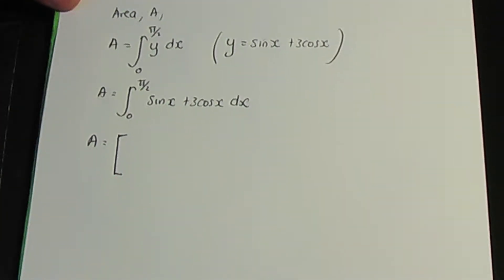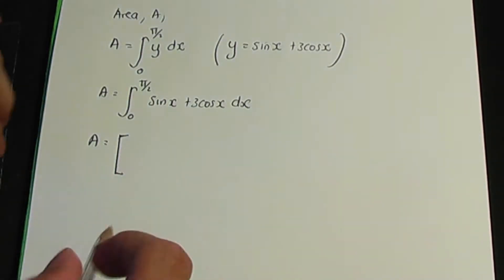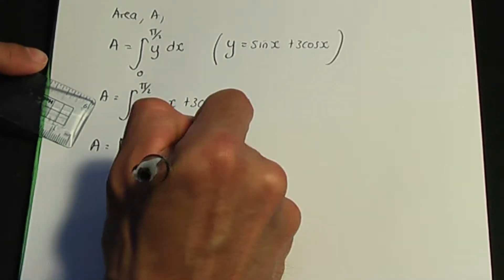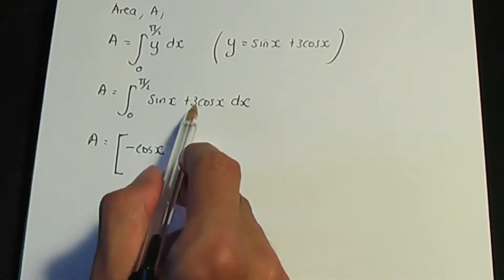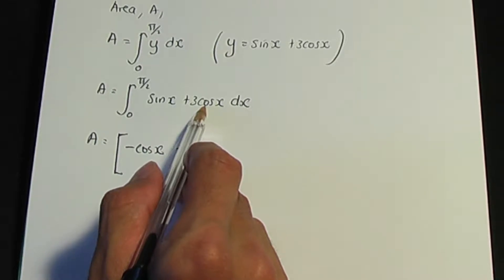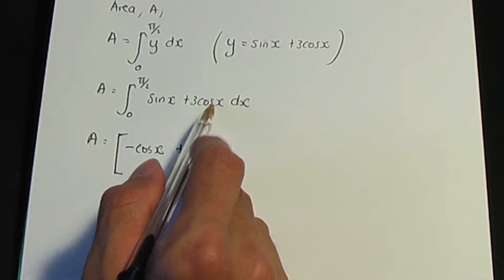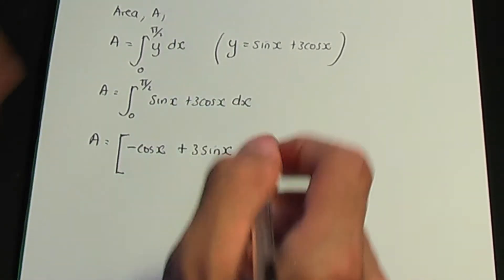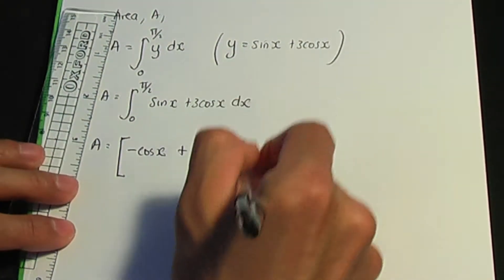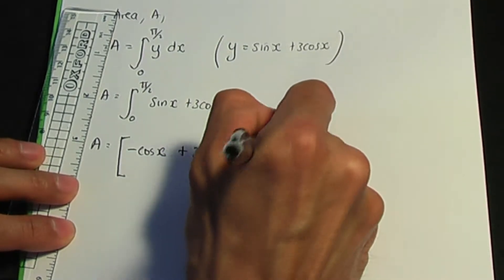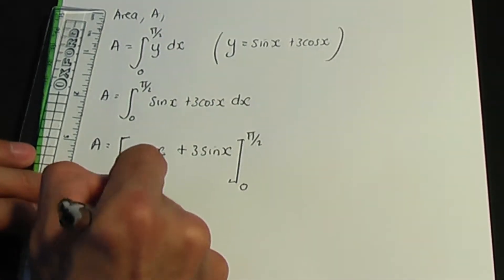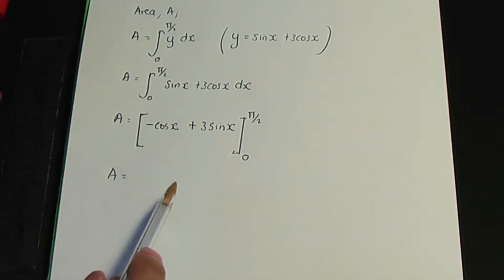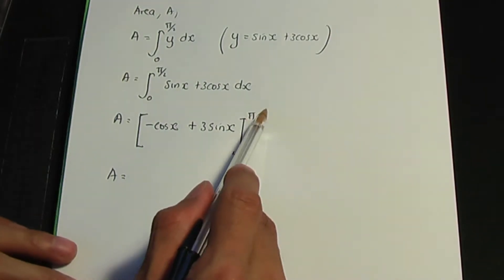We have trigonometric functions to integrate. When we integrate sine, it's minus cos; when you integrate cos, it's plus sine. So if you integrate 3 cos x it's 3 sine x, and the result is minus cos x plus 3 sine x, evaluated between our limits zero and pi over two.